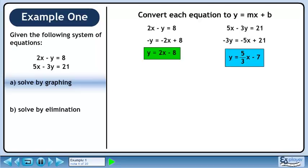In the second equation, bring the 5x to the right side then divide both sides by minus 3. This gives y equals 5 over 3x minus 7.